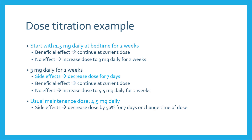A patient may be started on 1.5 milligrams daily at bedtime for 2 weeks. If beneficial, they should continue on this dose. If there is no relief of symptoms, the dose can be doubled to 3 milligrams daily for 2 weeks. If doubling leads to side effects, decrease the dose back down for 7 days. If still no benefit at 3 milligrams, the dose can be increased to 4.5 milligrams daily, which is the usual maintenance dose. Changing the timing of dosing is also a strategy for managing side effects.